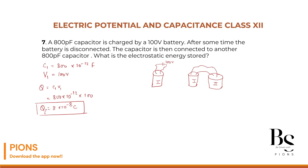Now, how much charge is stored across the first and second capacitors when they are connected? When you connect a 100 volt battery to the first capacitor, it gets this maximum charge — not beyond, because the battery itself is 100 volts. Now I am taking this charge and connecting it to the second capacitor. C2 is also 800 picofarad, 10 to the power minus 12.